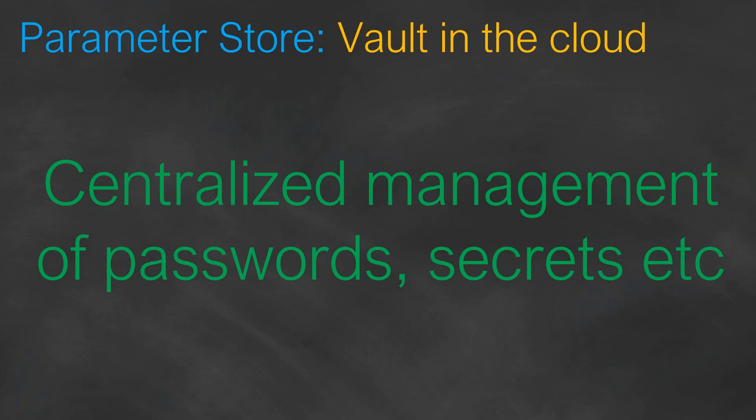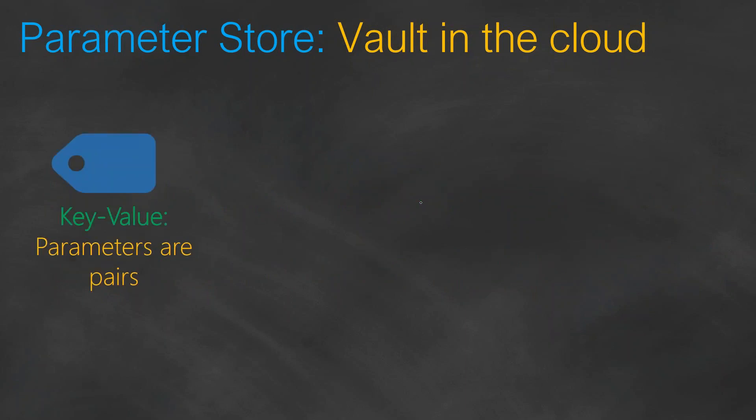Let's look at the different features offered by Parameter Store. It uses a very familiar format — a key-value format. For example, a simple parameter could be: my Linux AMI ID equal to ABC1234. That would be my golden AMI which all my scripts will be using. That is the format Parameter Store takes.